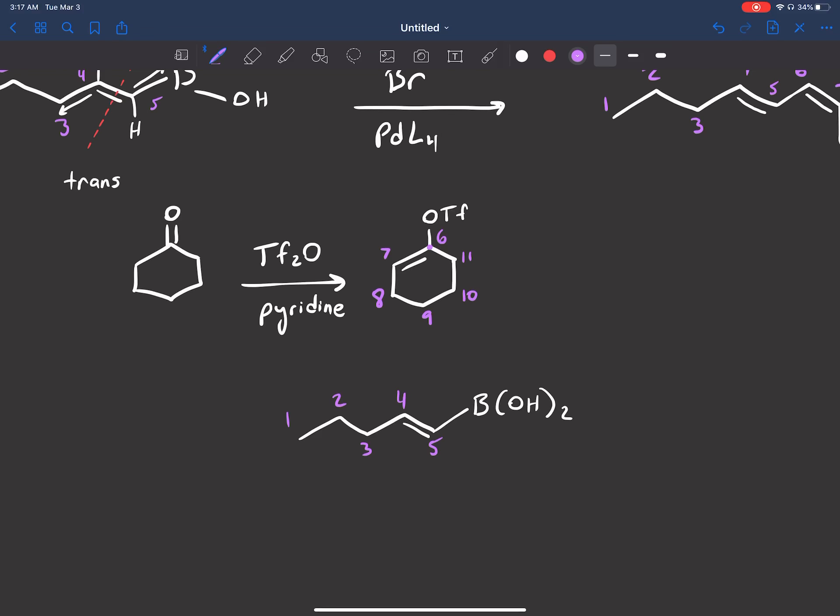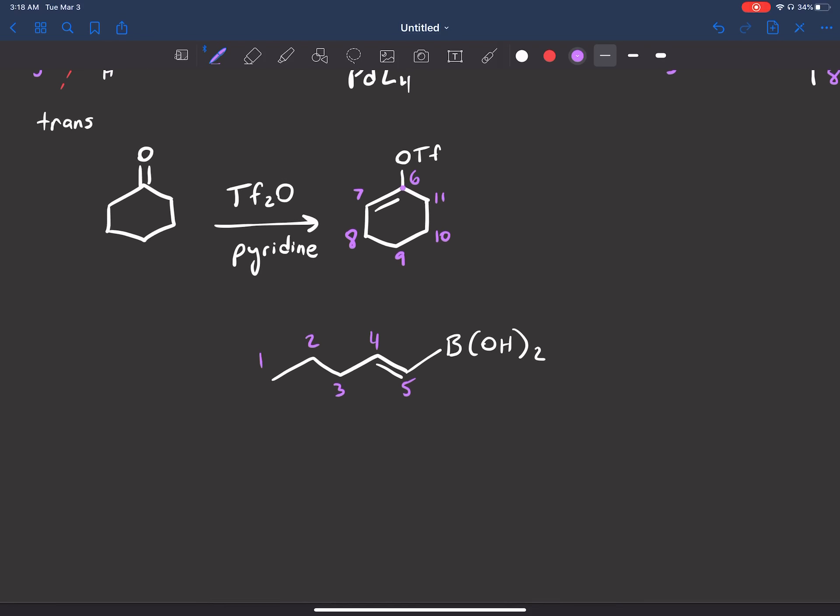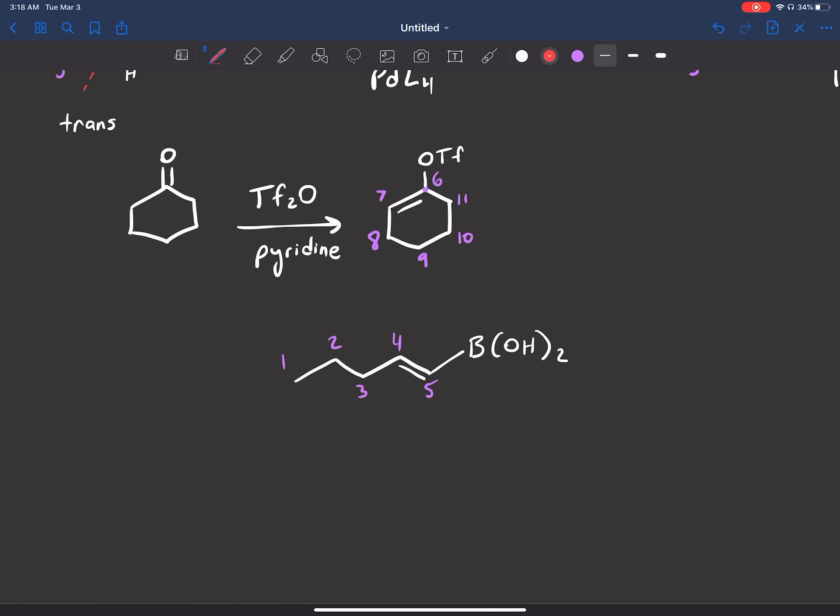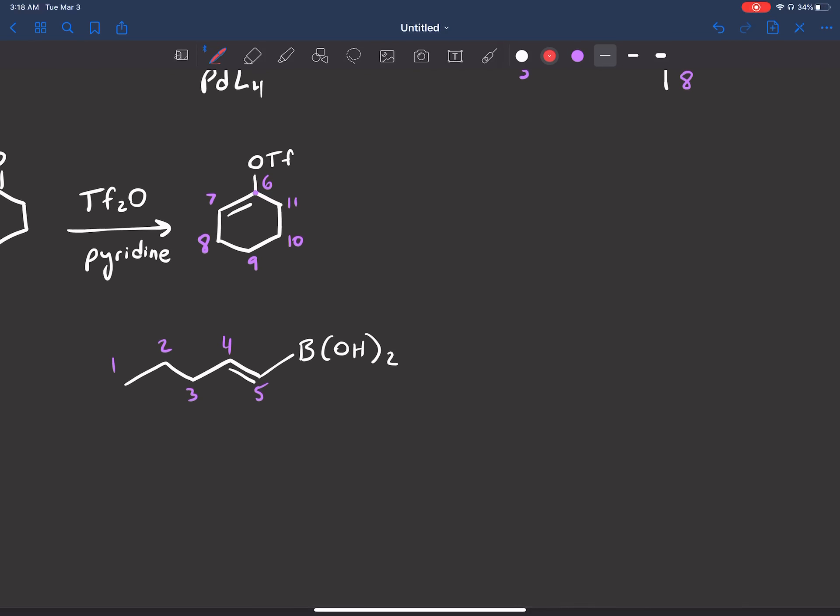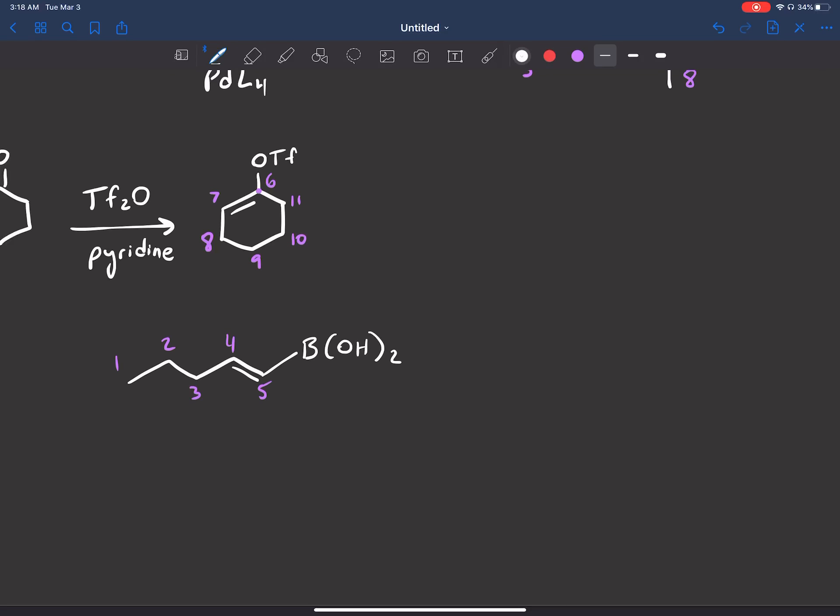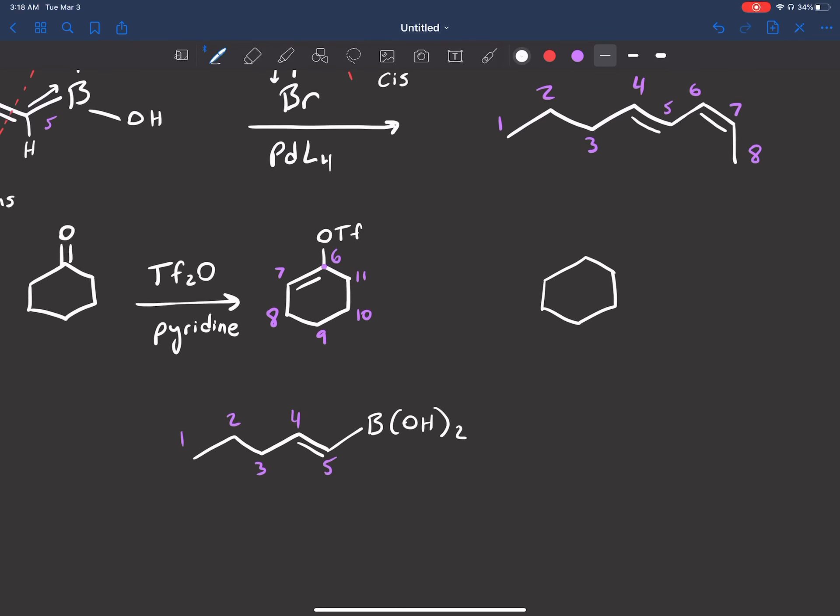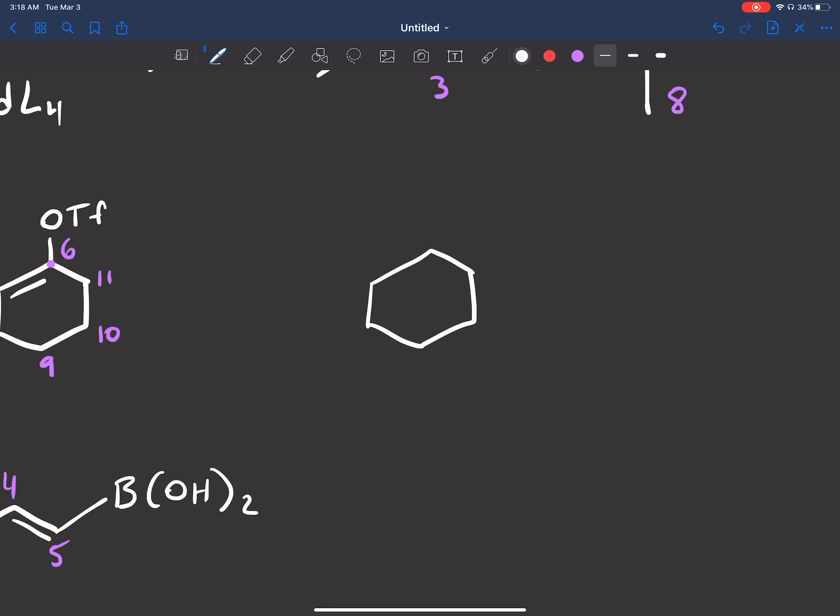Now, if you guys remember in the Heck reaction, we had this weird rearrangement because of that beta-hydride elimination. The Suzuki reaction does not have this problem. So you're not going to get a weird shifted-looking product. If we did this with the Heck reaction using a six-membered ring, and if we didn't use a triflate, we usually get something like this. Remember, this is if we did not use a triflate.